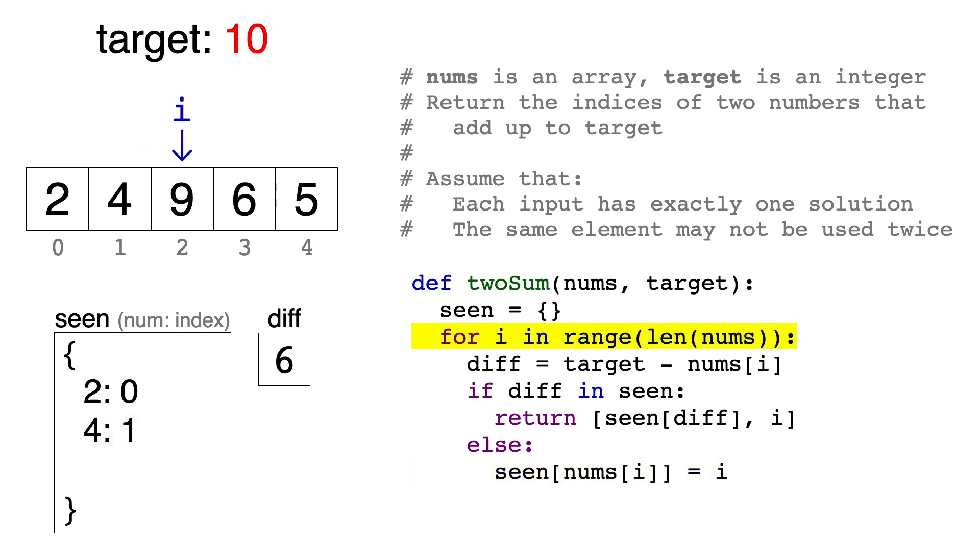The next number is 9, and the difference is 1. 1 is not a key in the dictionary, so again, we'll log the key-value pair 9 and 2.